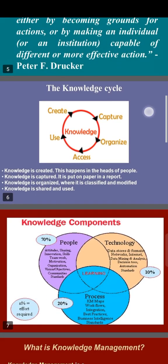The knowledge cycle. The knowledge cycle involves: capture, organize, assess, use, and create. Knowledge is created — this happens in the heads of people. Knowledge is captured — it is put on paper or in a database. Knowledge is organized when it is classified and modified. Knowledge is shared and used.